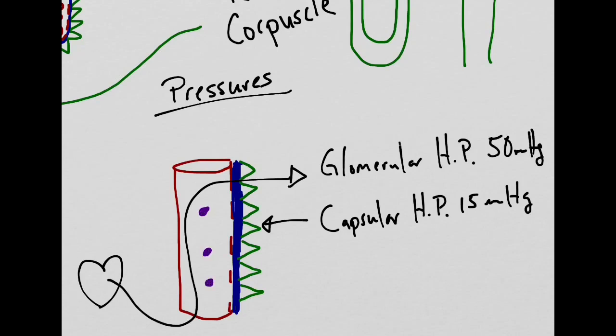The last pressure being discussed is blood colloid osmotic pressure. This osmotic pressure is caused by the plasma proteins that are left in the blood. This osmotic pressure measures around 25 millimeters of mercury.